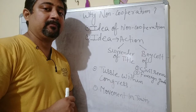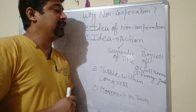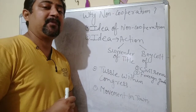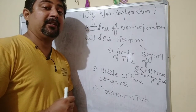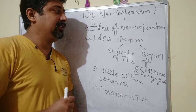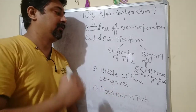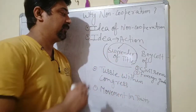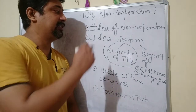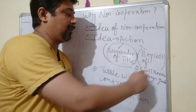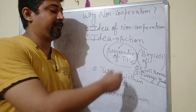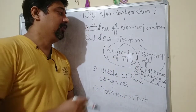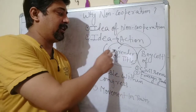The question was how this idea would be translated into action. For that, Gandhiji decided to go with certain phases or programs. The first one was the surrender of titles, introduced by Gandhiji under his non-cooperation action program. The second was boycott of civil service, boycott of foreign goods, and similarly boycott of schools, offices, and courts.